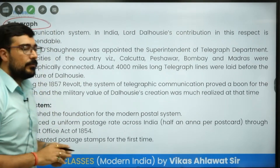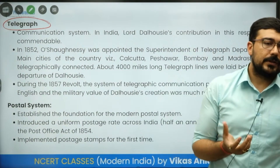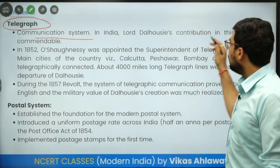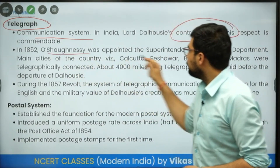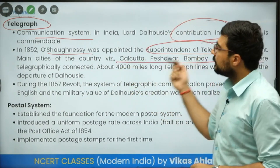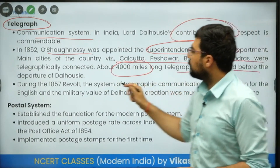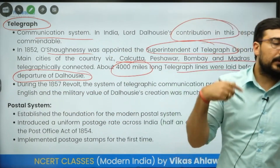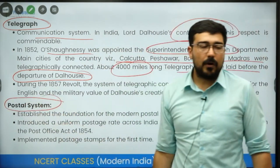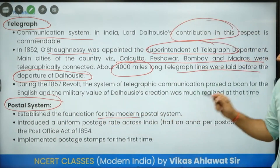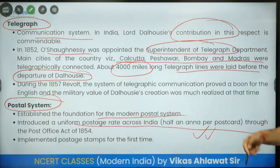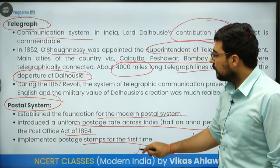He is considered the father of modern India because he introduced railways and telegraph, reshaping the communication system. In 1852, famous personalities were brought in as superintendents of the telegraph department, and cities like Calcutta, Peshawar, Bombay, and Madras were connected via around 4,000 miles of telegraph lines laid before Dalhousie's departure. He also came out with a uniform postal system — through the Post Office Act of 1854, a uniform postage rate of half an anna per postcard was implemented across India for the first time.